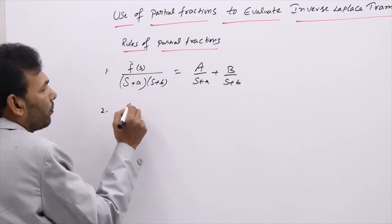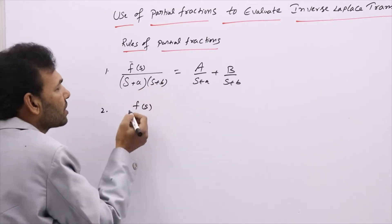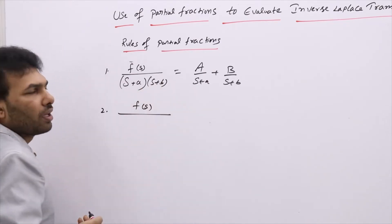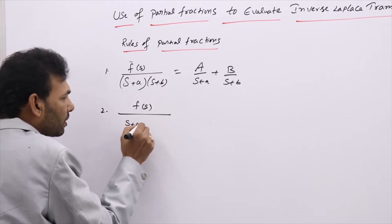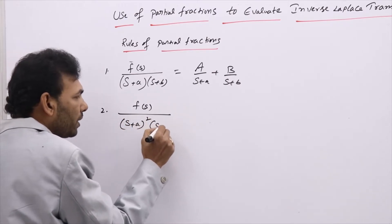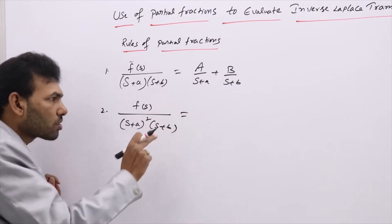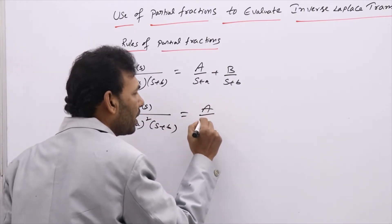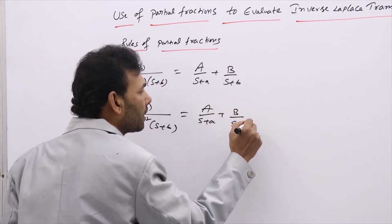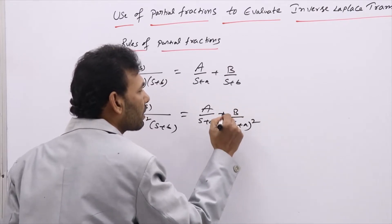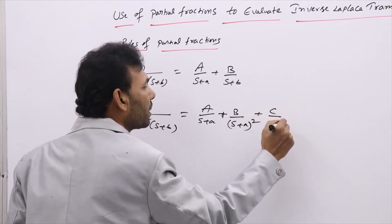If you have a function or constant f(s) in the numerator and the denominator is (s+a)² times (s+b), then you need to split it like this: A/(s+a) plus B/(s+a)² plus C/(s+b). When you have a whole square in a factor, you need this three-term decomposition.